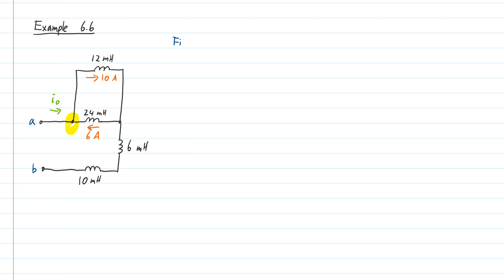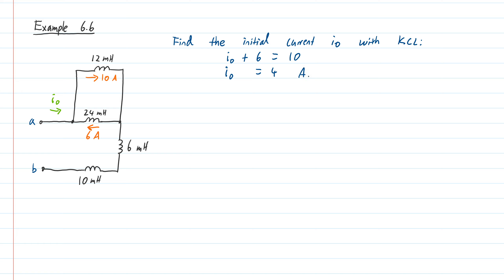Finding the initial current i-naught with Kirchhoff's current law: the sum of currents entering that node is i-naught plus 6 amps, and the sum of currents leaving is 10 amps. That gives me i-naught equals 4 amps — that's the initial current.